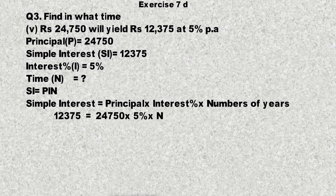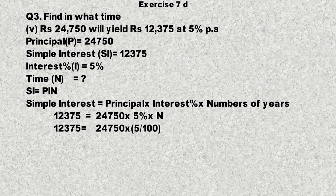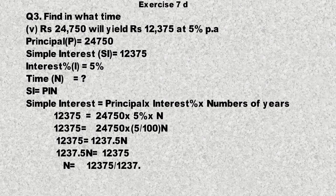Simple interest = 12,375، principal = 24,750، interest percentage = 5% یعنی 5/100۔ 100 کو 24,750 پر divide کر کے 5 سے multiply کیا جائے گا تو 12,375n آجائے گا۔